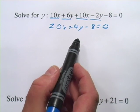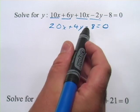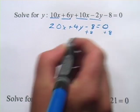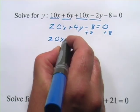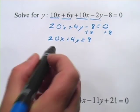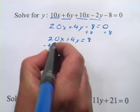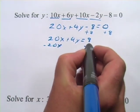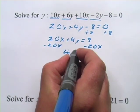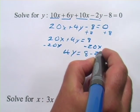Now what I want to do is work on getting everything other than the y over to the other side. I'm going to start with the number here. I'm going to add 8 to both sides. Now I've got 20x plus 4y equals 8. Now I'm going to subtract this 20x from both sides. And that leaves me over here with just 4y equals 8 minus 20x.